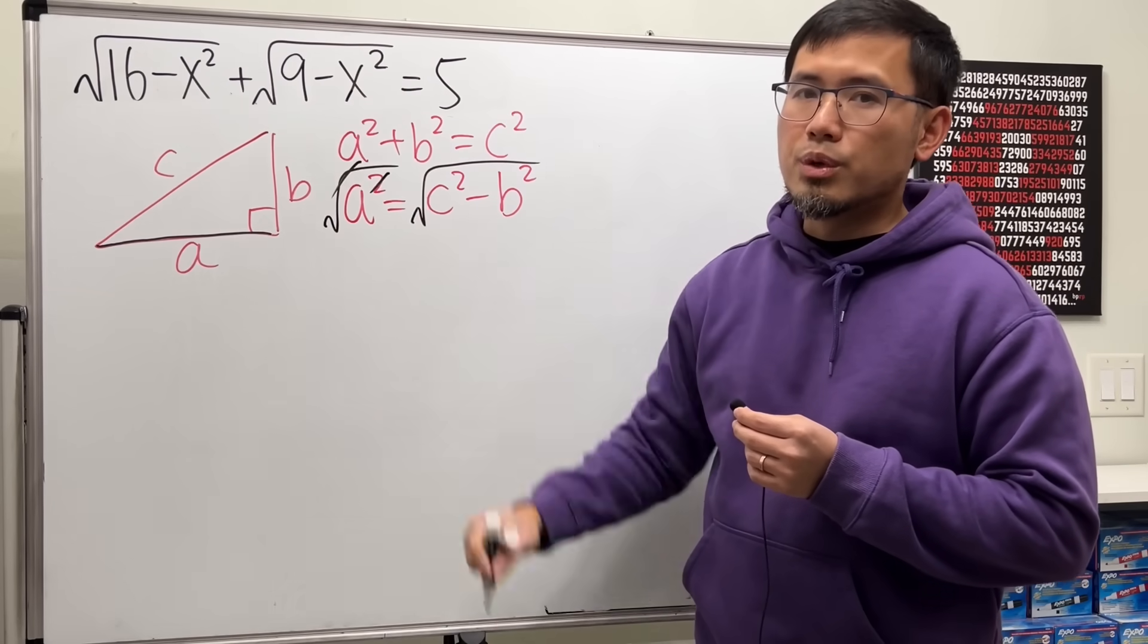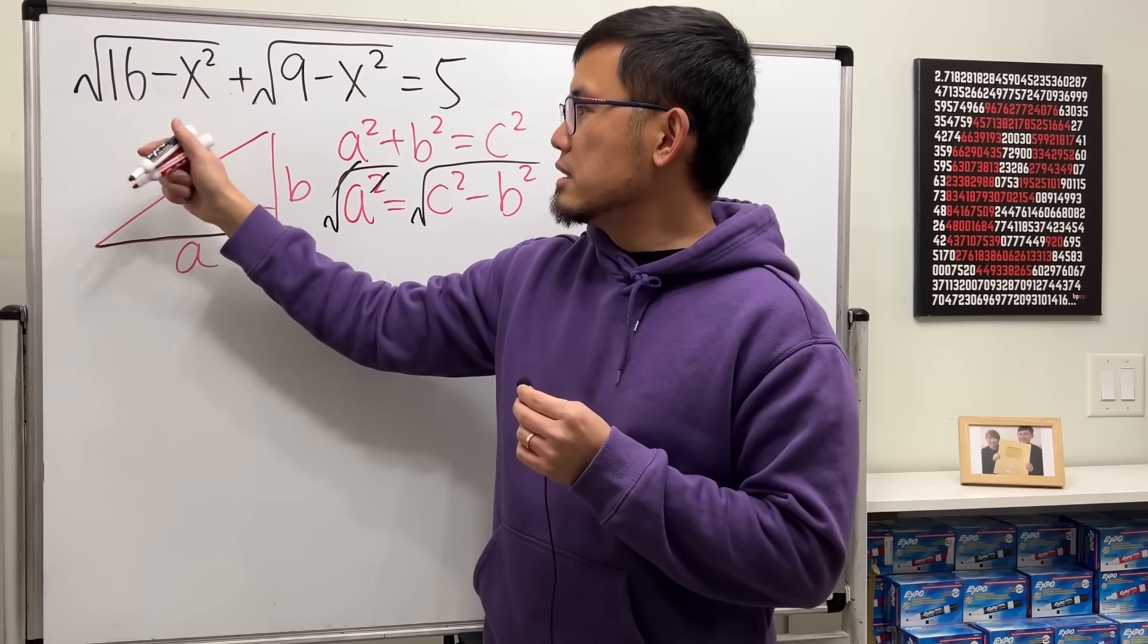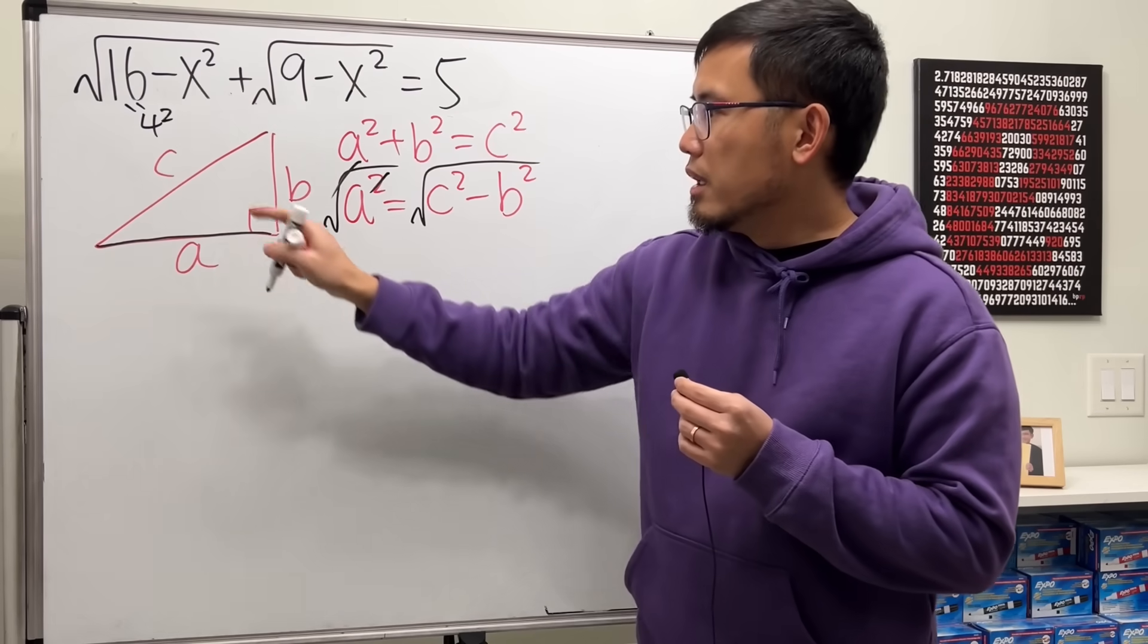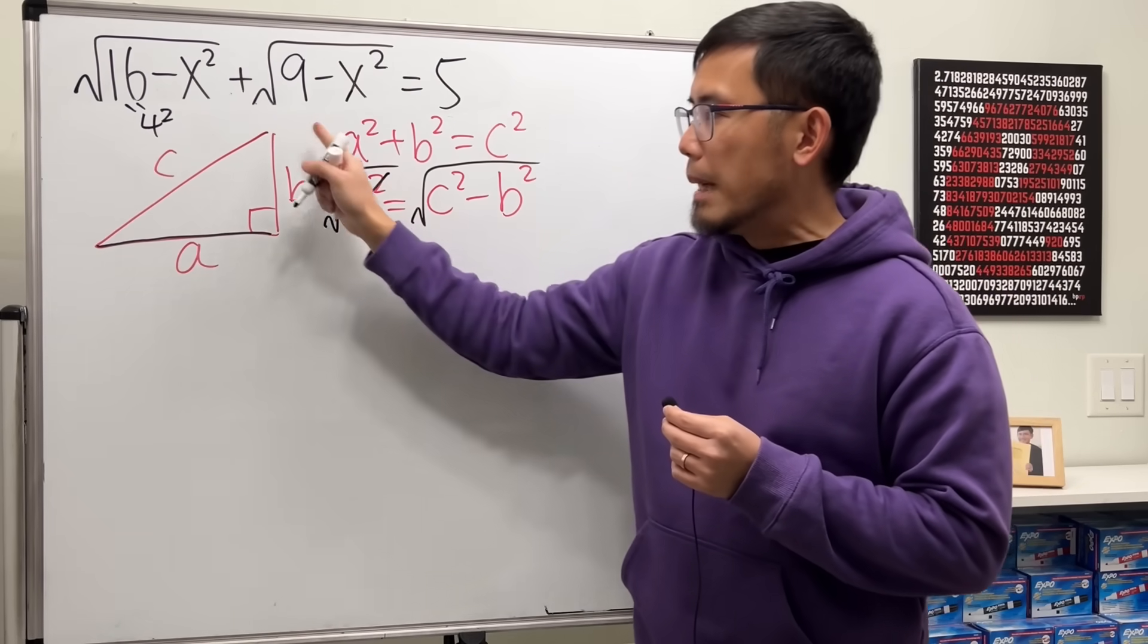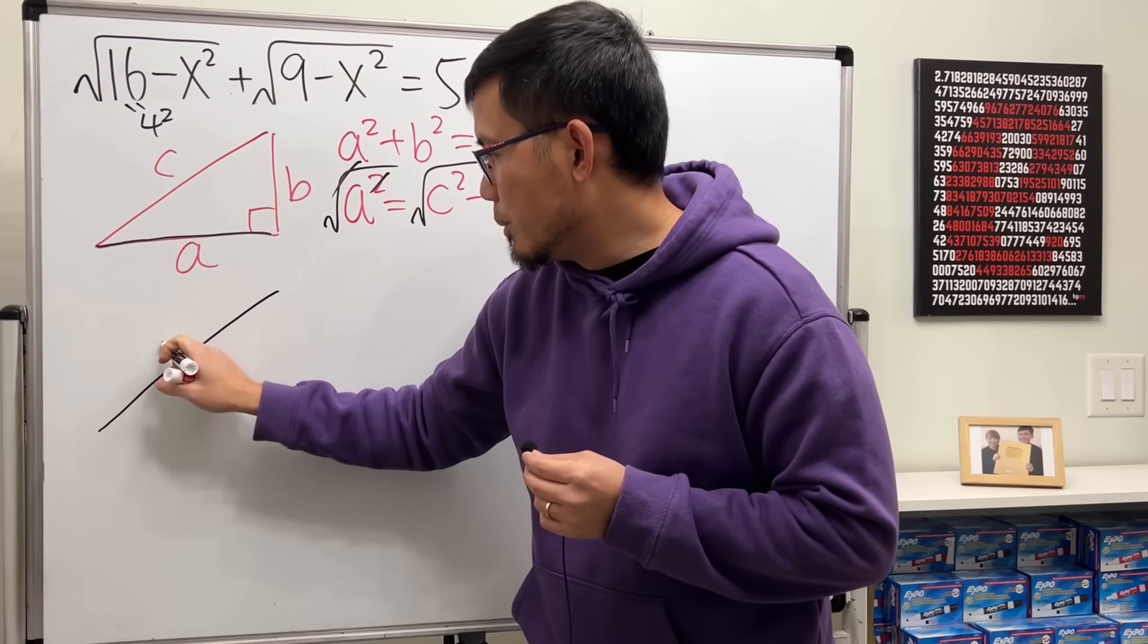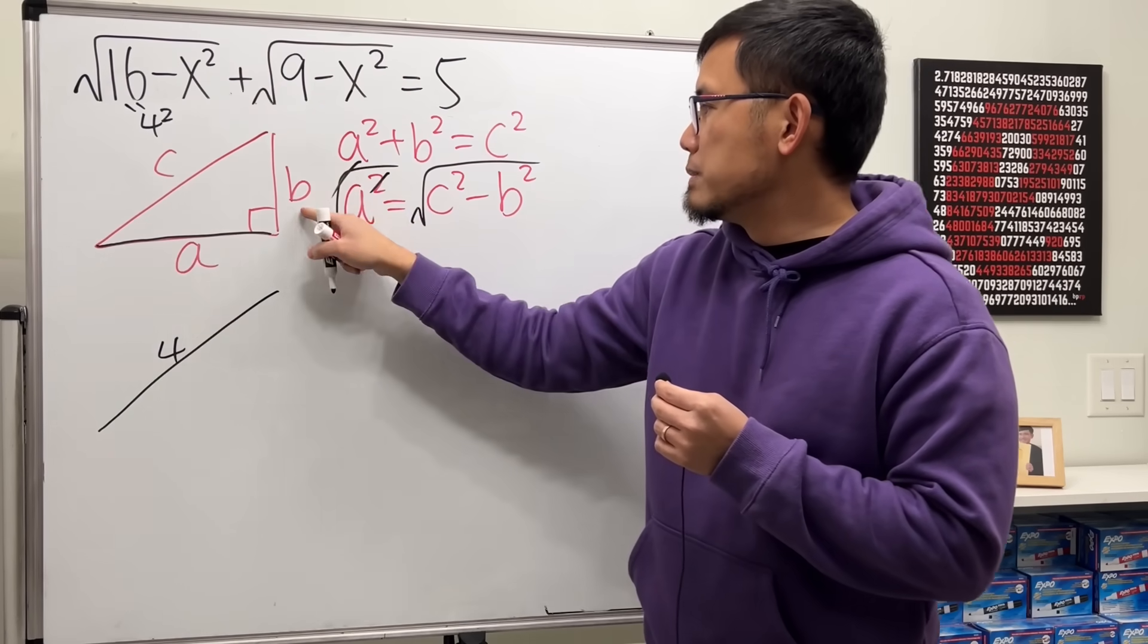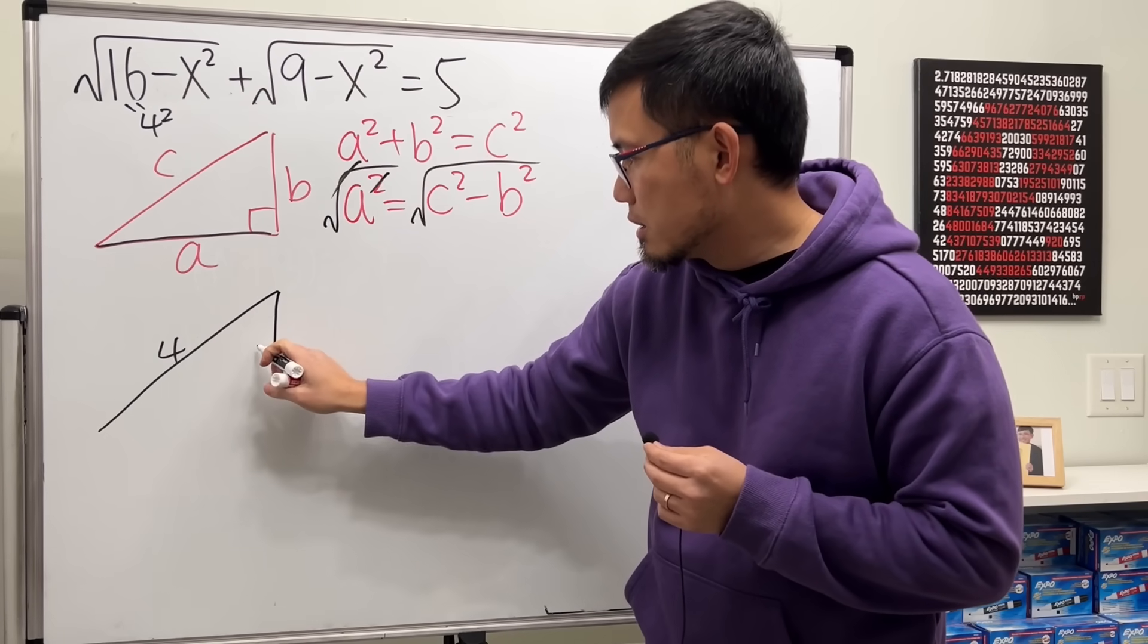Similarly, we can do the same thing right here. But let's focus on this right here first. 16, as I said earlier, is 4 squared. This right here corresponds to the c, the hypotenuse. So I'll draw a triangle for you guys right here. This right here will be 4. Minus x squared, which corresponds to this side right here. So that will be down here like this. Still x.